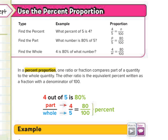You can see a bunch of proportions here that we're going to solve. In a proportion, one ratio or fraction compares part of a quantity to the whole quantity. The other ratio is the equivalent percent written as a fraction with a denominator of 100. So what we're looking at here is 4 out of 5 is 80%. The part is the 4, the whole is the 5, which is 80 over 100. So 4 over 5 equals 80 over 100.